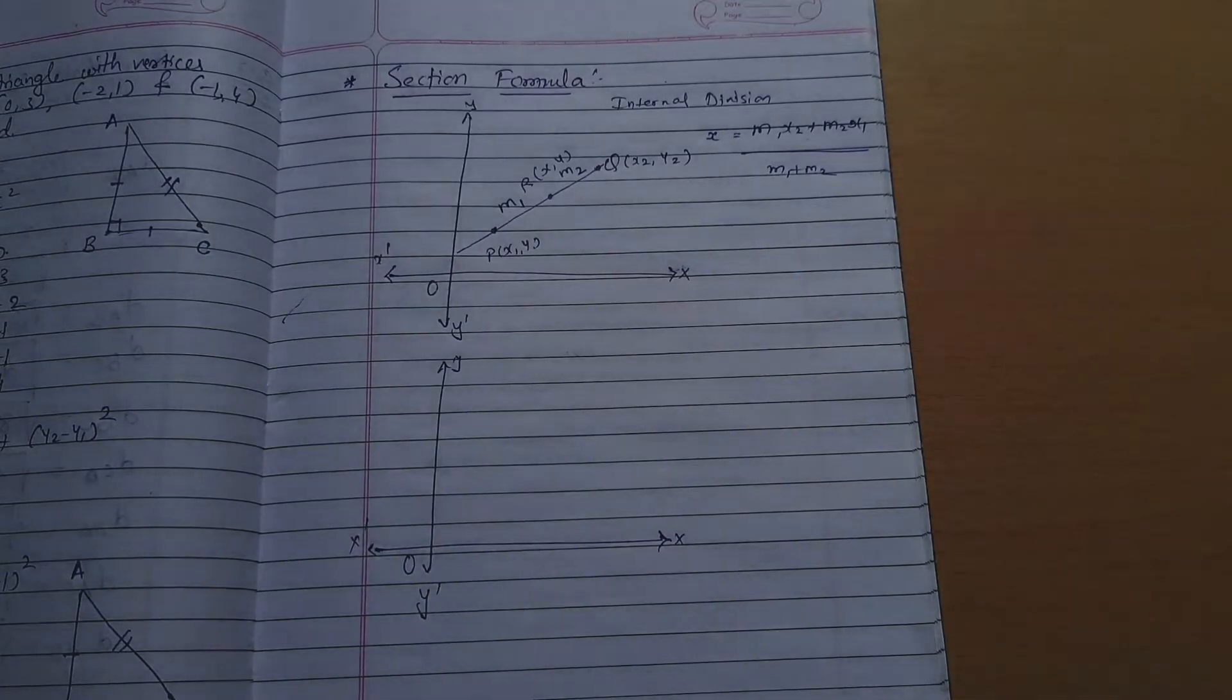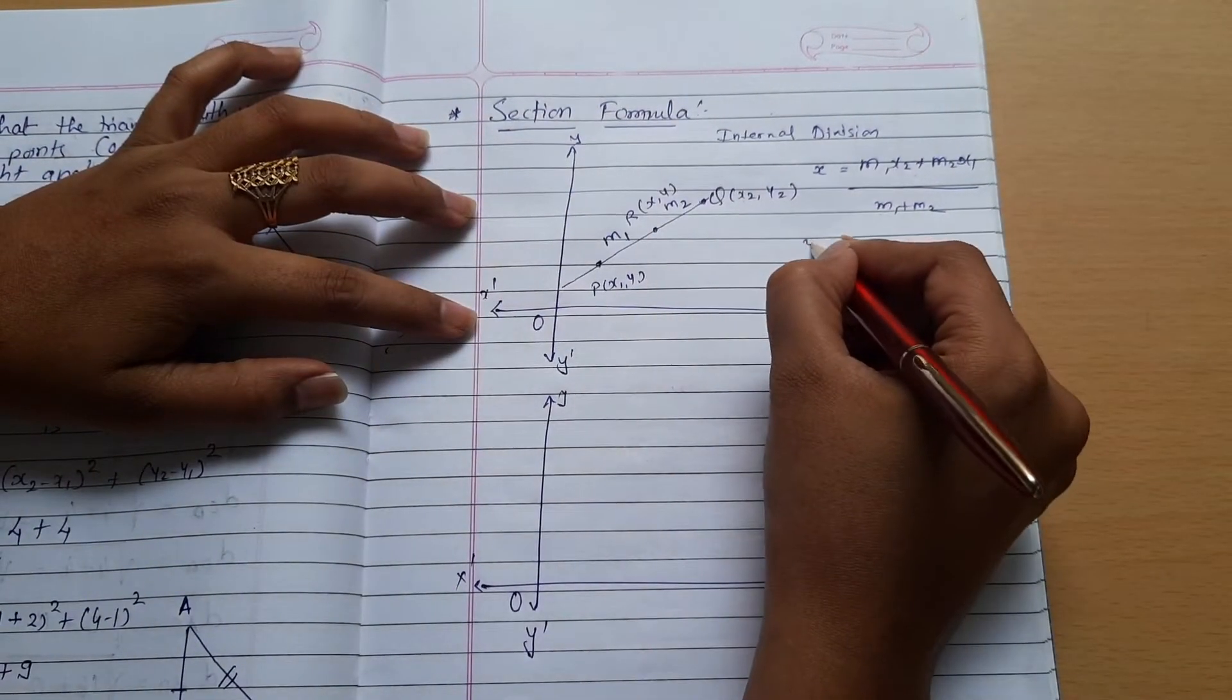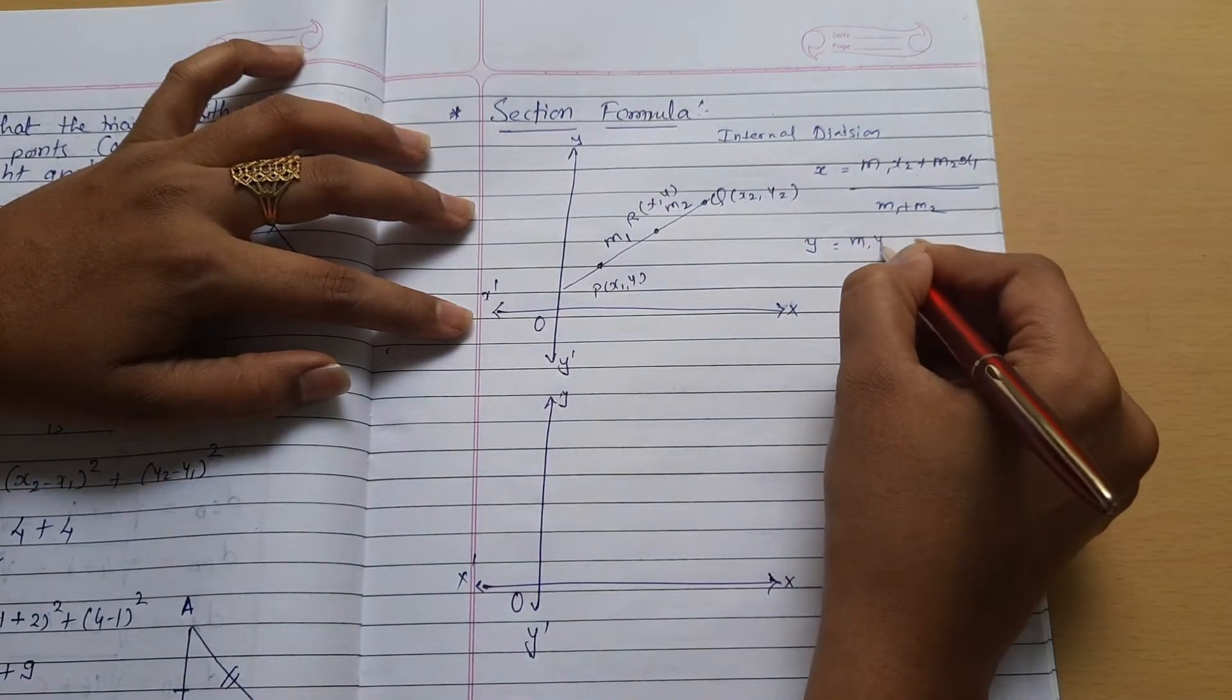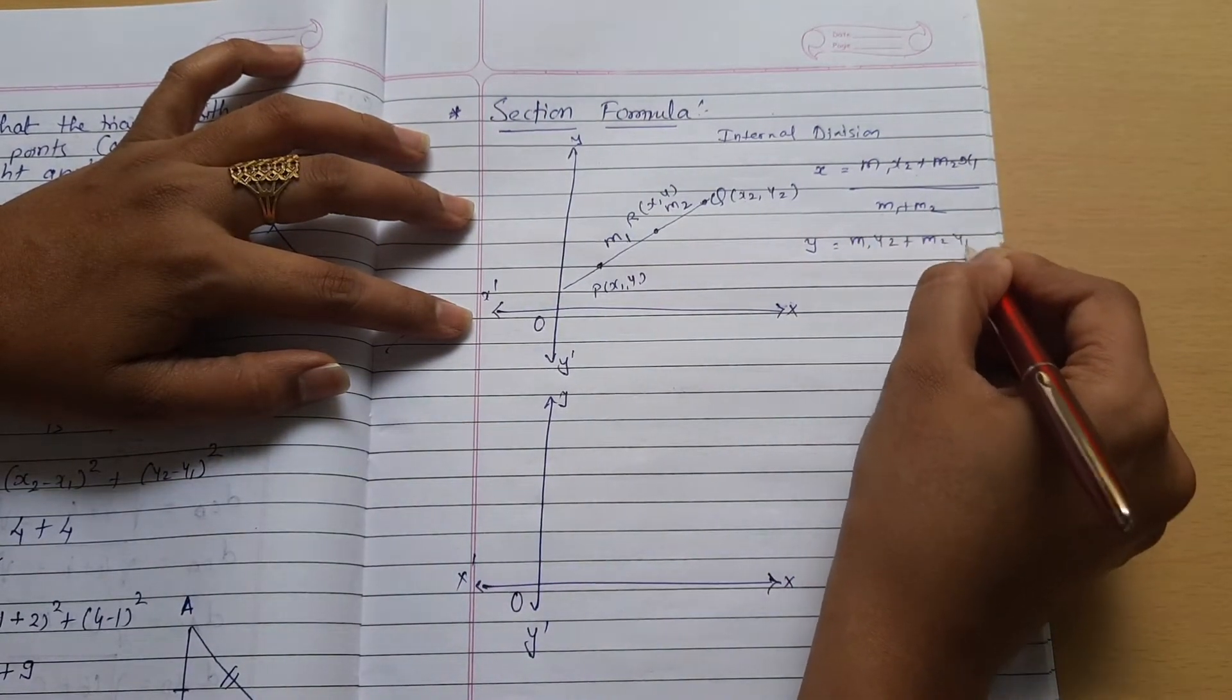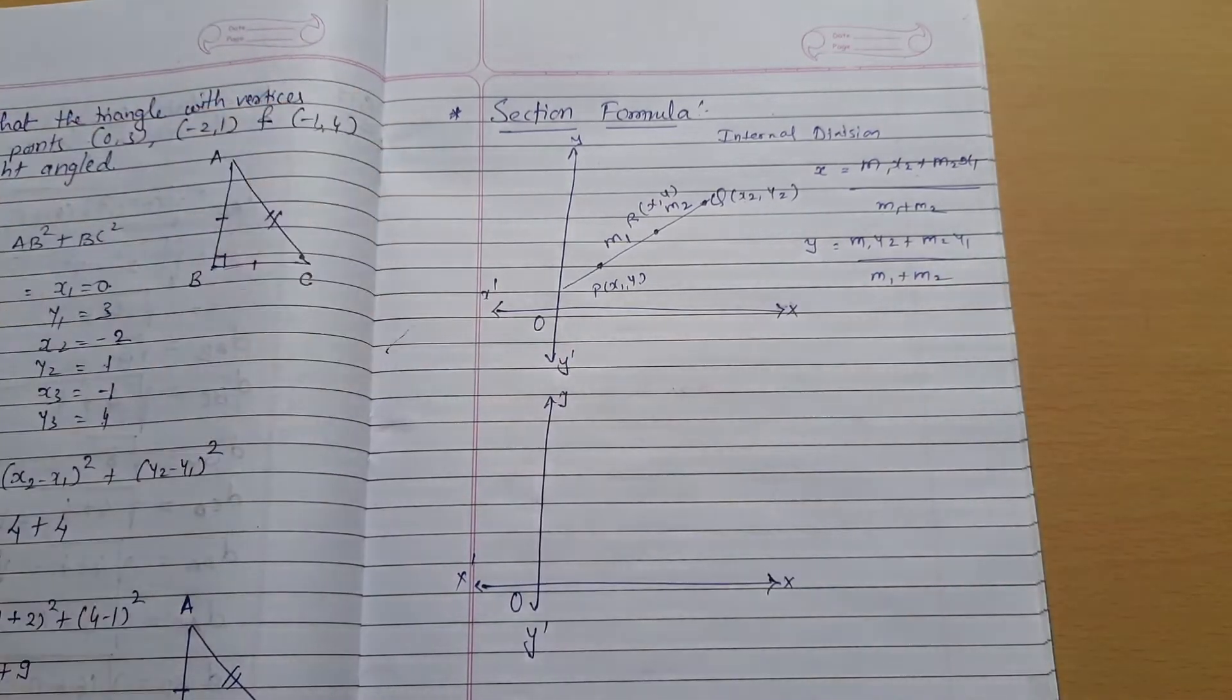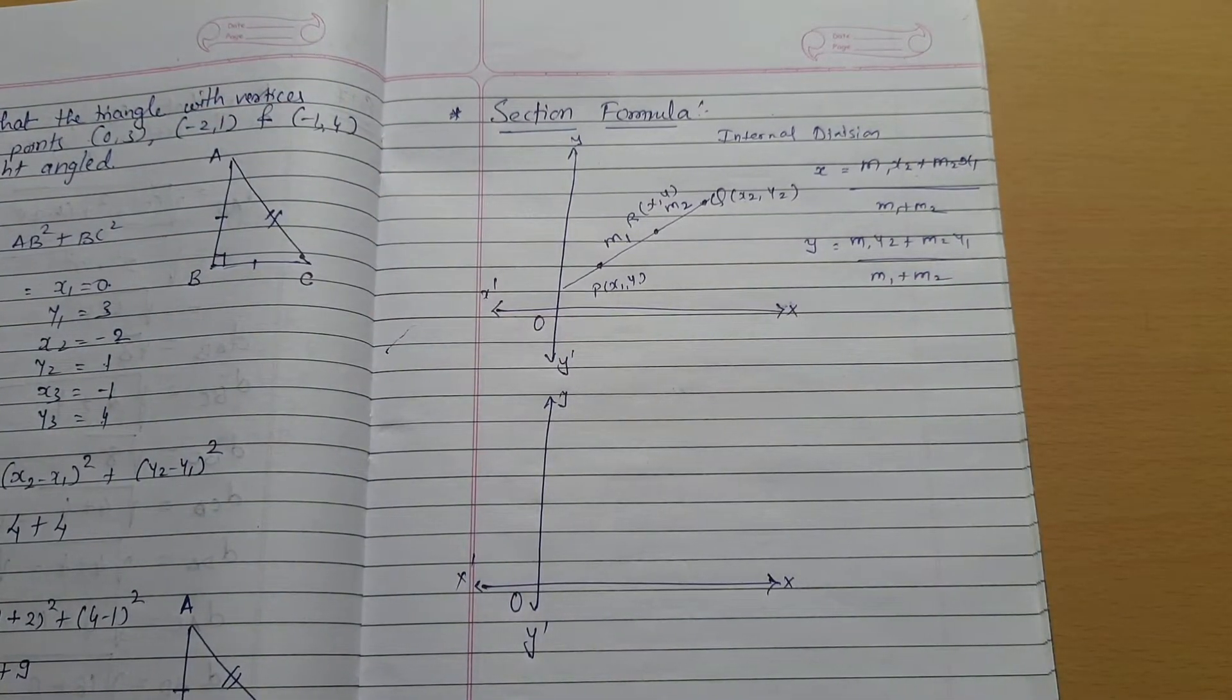Same with the y coordinate, then it will be equal to m1 y2 plus m2 y1 divided by m1 plus m2.